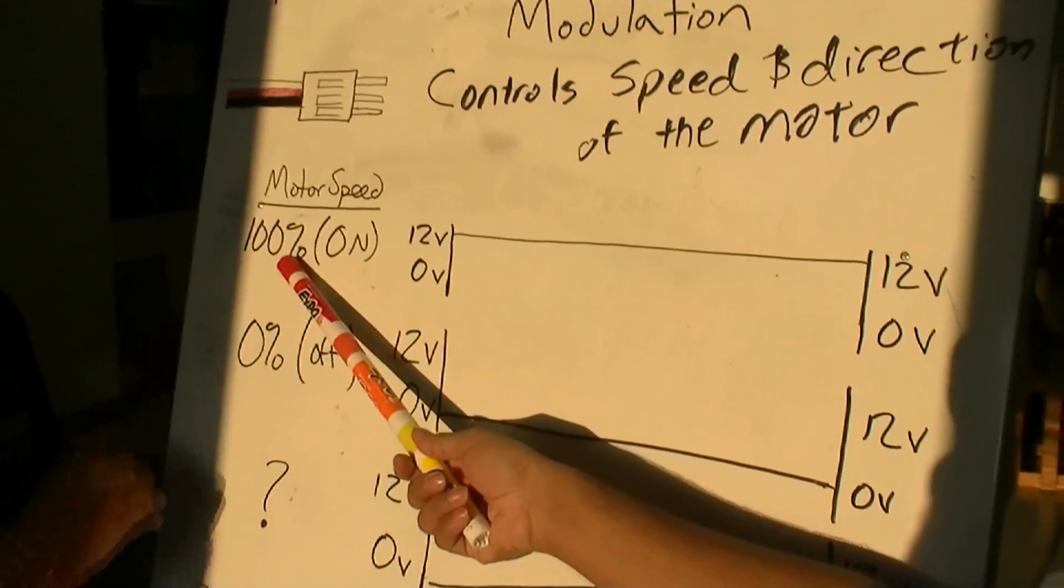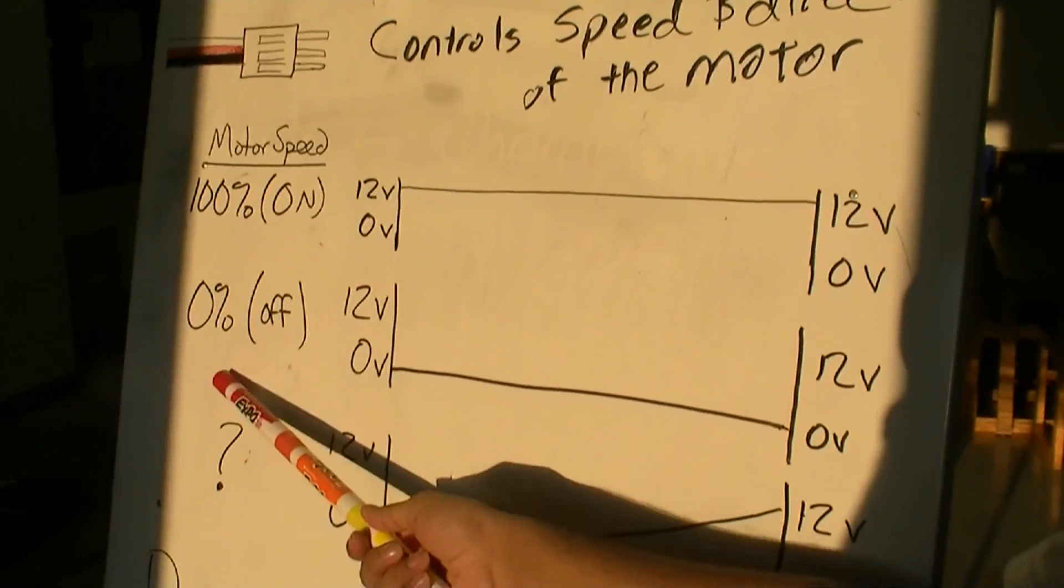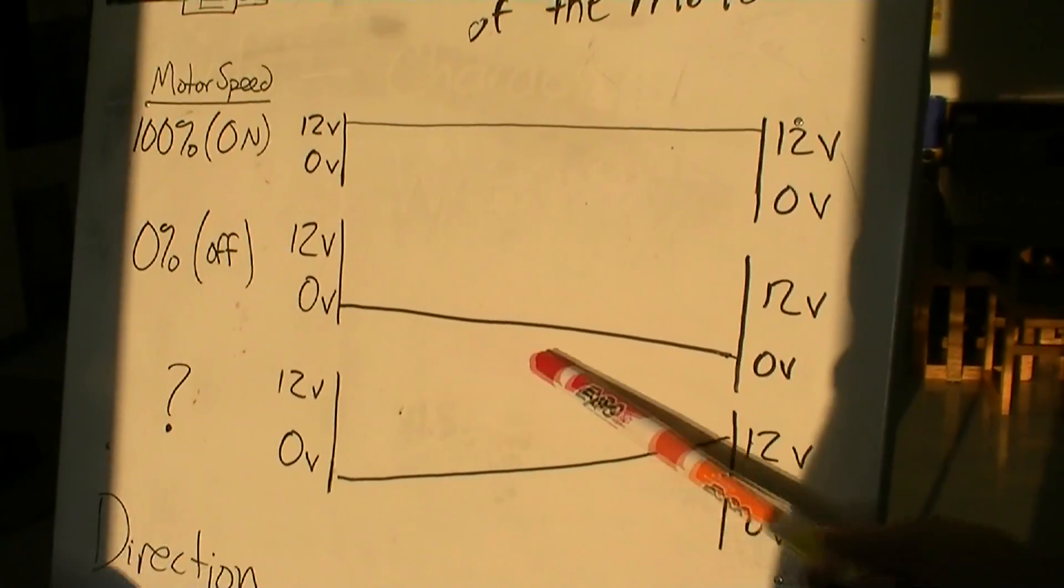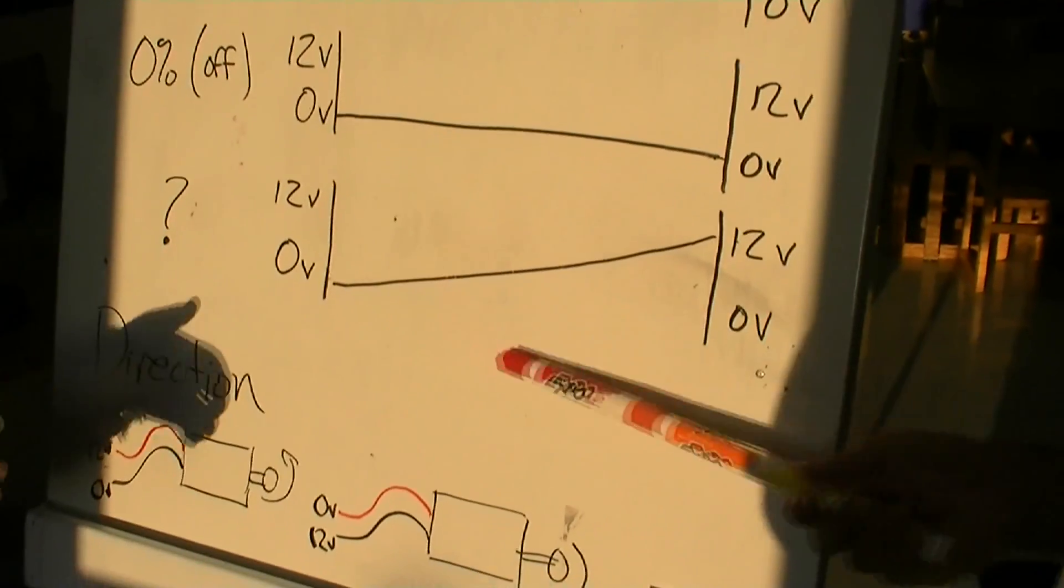If the motor speed is 100%, then it is equivalent to 12 volts of power. And if it's 0%, it is equivalent to 0 volts of power. So how do we get in between 0 and 12?